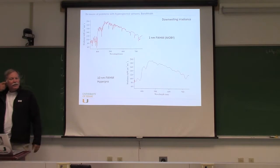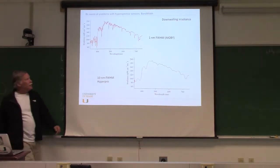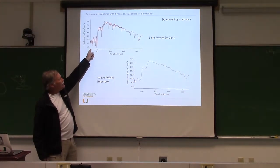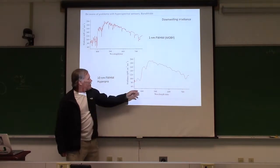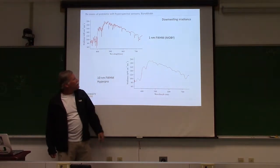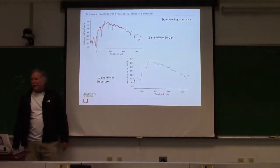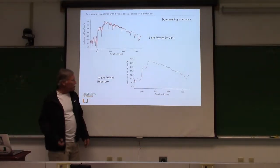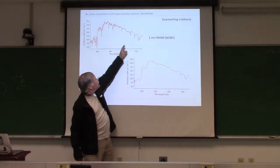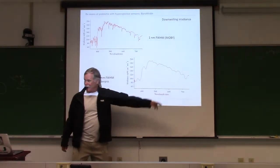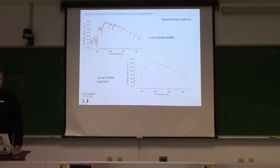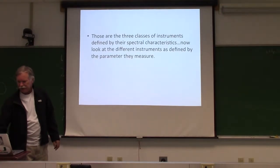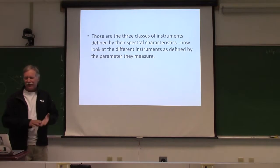Bandwidth also matters for hyperspectral sensors. At 1 nm FWHM, like MOBI, you can see all the sharp spectral features in the downwelling irradiance. At 10 nm FWHM, like the HyperPros we'll be using, those sharp features are washed out. What you see depends on what the bandwidth of your detector is.